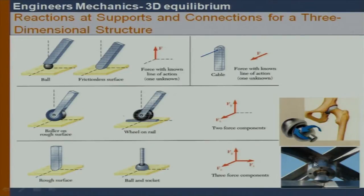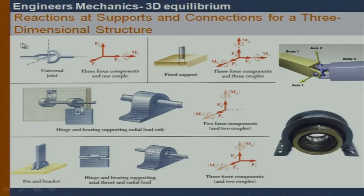The best example of a ball and socket joint is our hip joint. Another example is a solar roof panel on a frame structure where the ball goes into a cup. Now let us look at another type of connection: the universal joint, which is used in many cases, especially with rotational gears and so on.